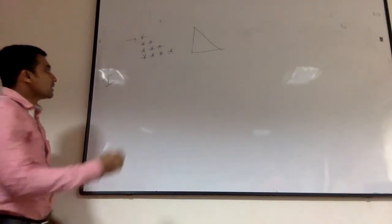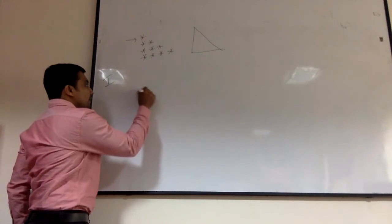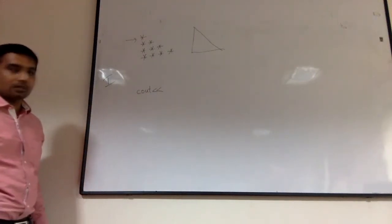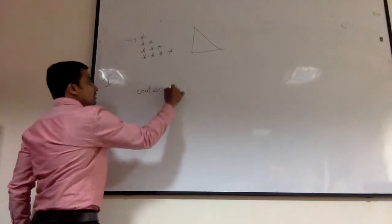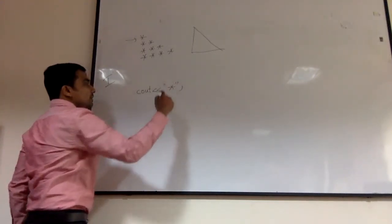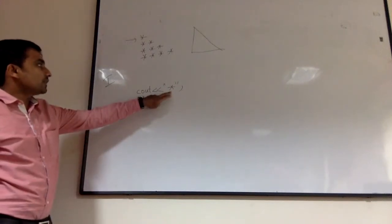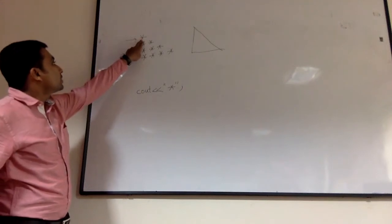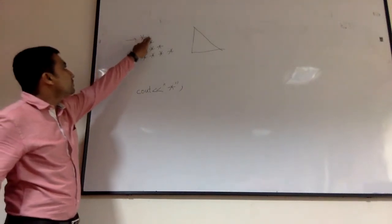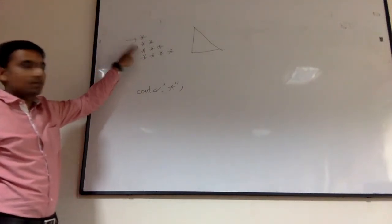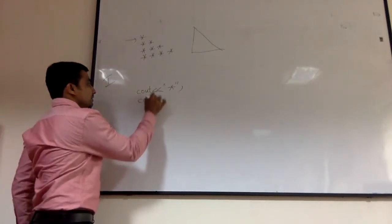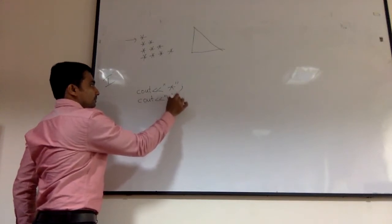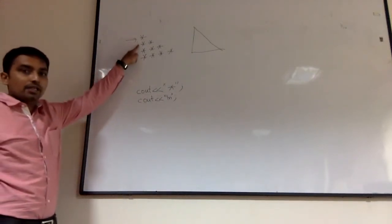To display anything, as you know, we have the object cout with the insertion operator. Then write whatever you want to display. In our context we have to display the asterisk. After that we have to go to the new line. For going to the new line we write cout with a newline. Now the logic for the first row is ready.